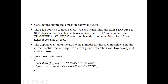The implementation of the arc coverage model for this state machine using the cover group method requires a cover group declaration with two cover points and one cross coverage. This is the syntax of the cover group method: a state cover point for the state variable, a transition from standby to sleep indicating that transition, and a transition from transfer to standby. Basically, FSM coverage measures how many FSM states have been visited and how many transitions occurred during verification. For this purpose, these two methods — cover directives and cover groups — are very important. Thank you.